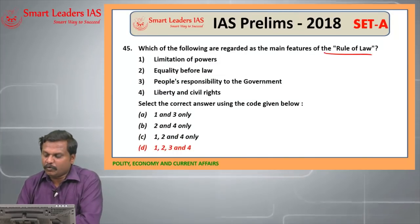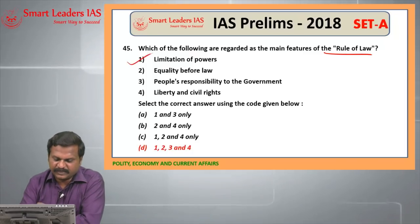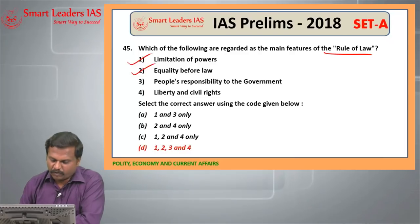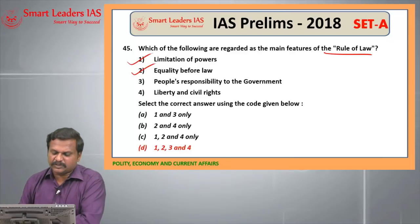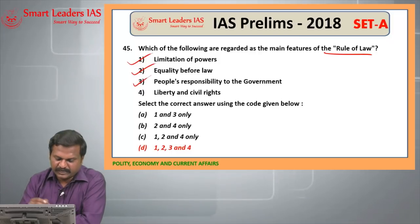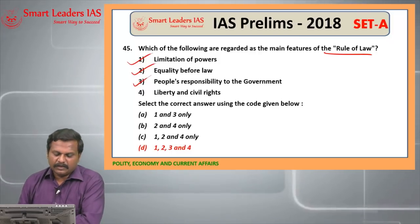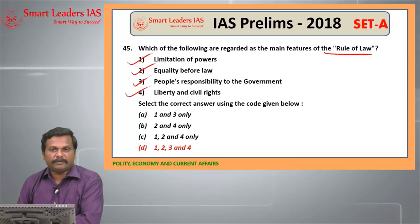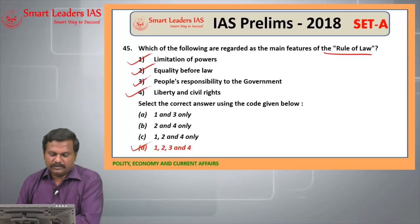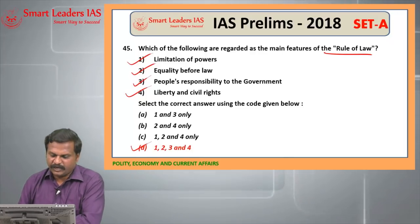42nd question: Rule of Law. Rule of Law includes limitation of the power of the government, equality before law, people should be responsible and should not violate the law of the land, and the rights and liberties of the people will be protected. Hence all 4 statements are right. Answer is 1, 2, 3 and 4.